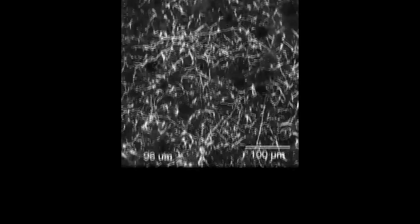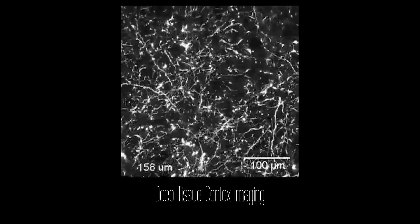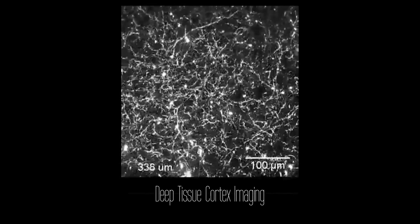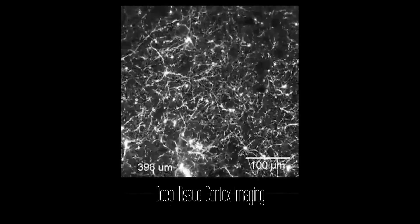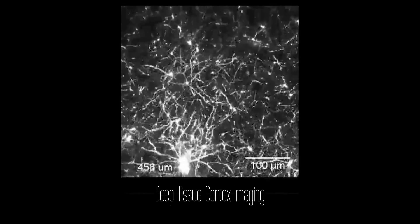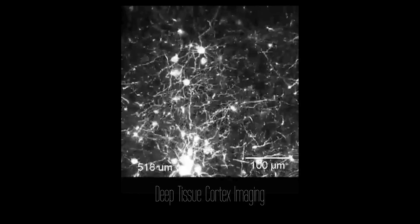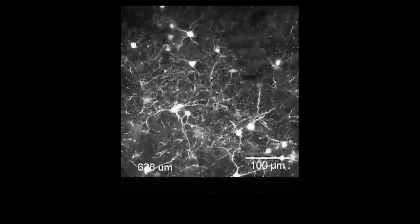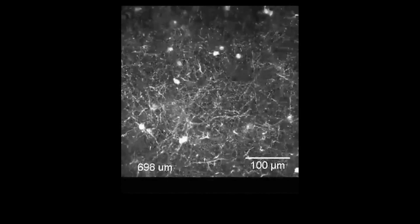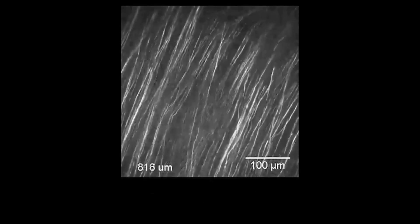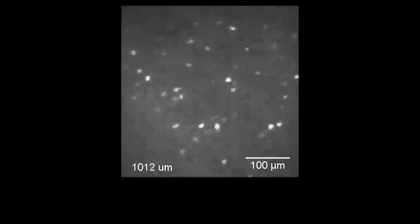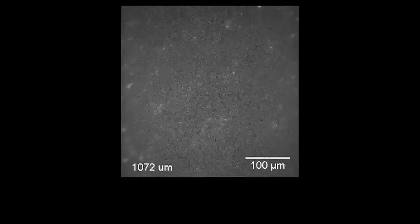Multiphoton microscopy works by using infrared light to excite fluorescence molecules that are absorbing normally in the visible range. And because you use infrared light, that allows you to image deeper.